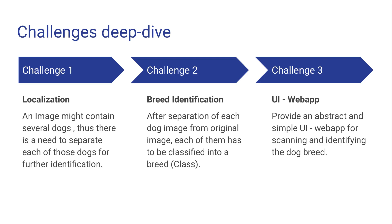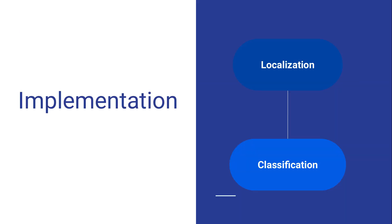We've done it in three parts. Challenge one is localization — localizing the dogs in the image. Challenge two is classification — each dog image is sent to the classifier which identifies the breed. The third part is the web app needed for scanning and identifying the breed of a dog.